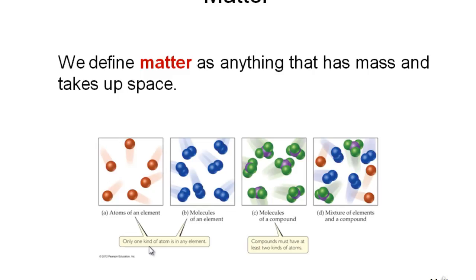The last picture is a mixture of elements and a compound. As we can see, we have everything we've seen so far — atoms alone, molecules of a pure element, and that compound. So it is a mixture of everything.